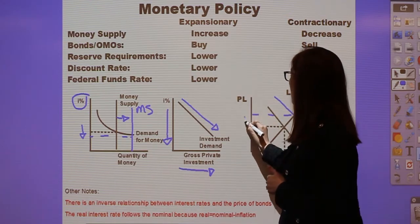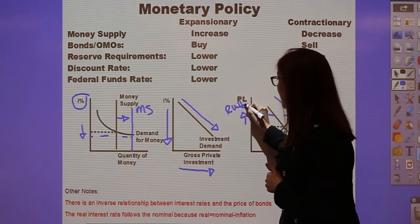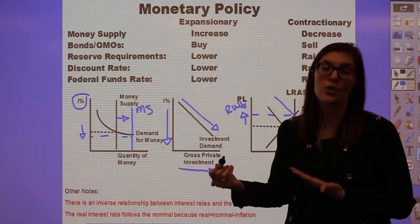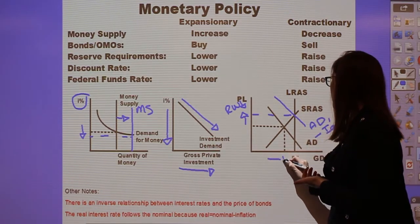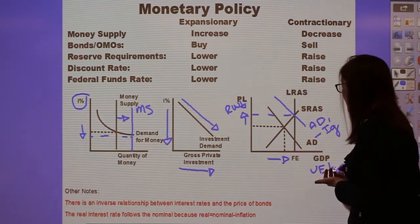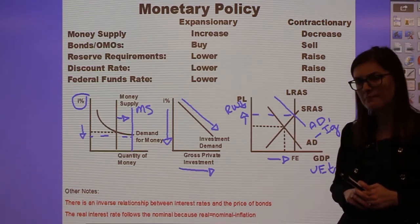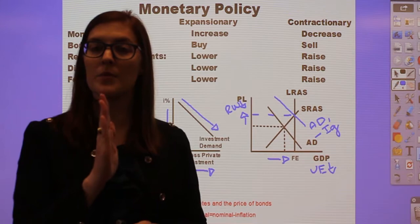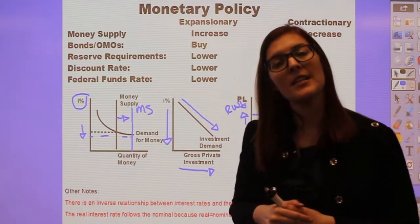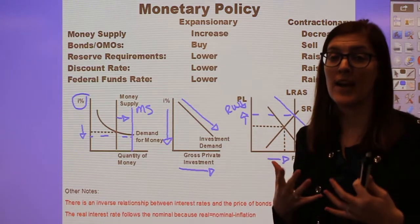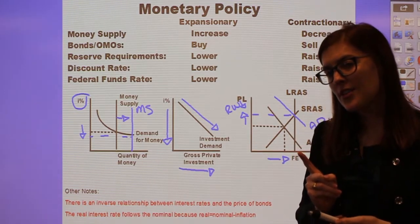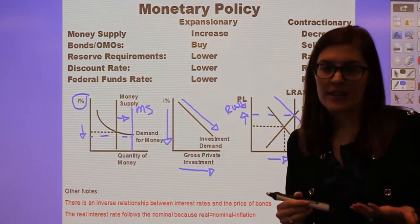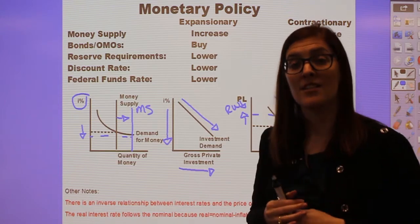When aggregate demand increases, price levels rise, which means real wealth goes down. This creates some inflation and hurts real wages, but in a recession — where price levels are already lower — some necessary inflation is acceptable. GDP goes up and unemployment goes down, fighting the recession. Contractionary monetary policy — selling bonds, raising rates and ratios — moves the money supply left, drives up nominal interest rates, and shifts aggregate demand left to fight an overinflated economy, though it does create some unemployment as a necessary trade-off.